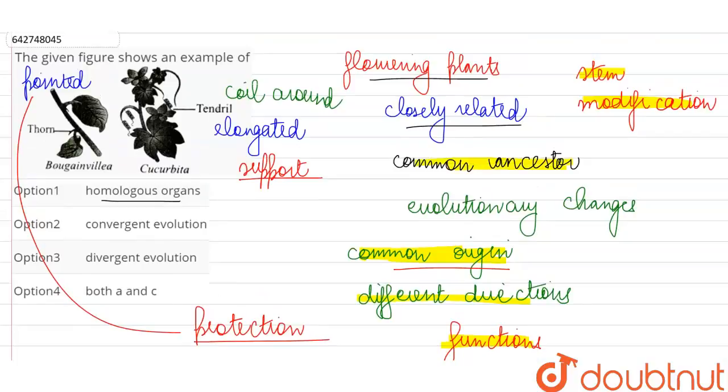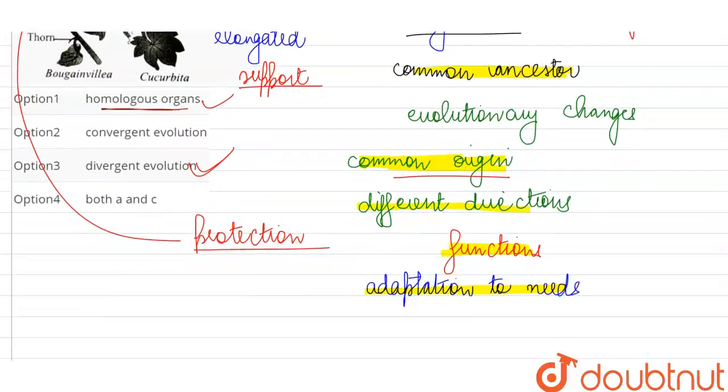When two structures evolve along different directions, they are known as the homologous organs, having common origin but different function. So thorn of bougainvillea and tendril of cucurbita, they are homologous organs, and homologous organs are created because of divergent evolution, that is when the same structure evolves along different directions for adaptation to the needs.